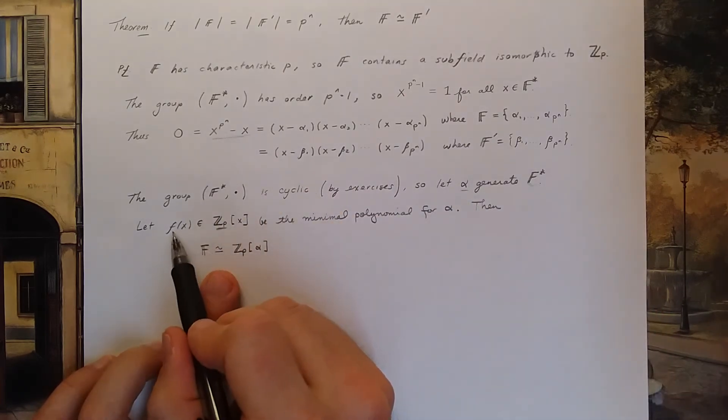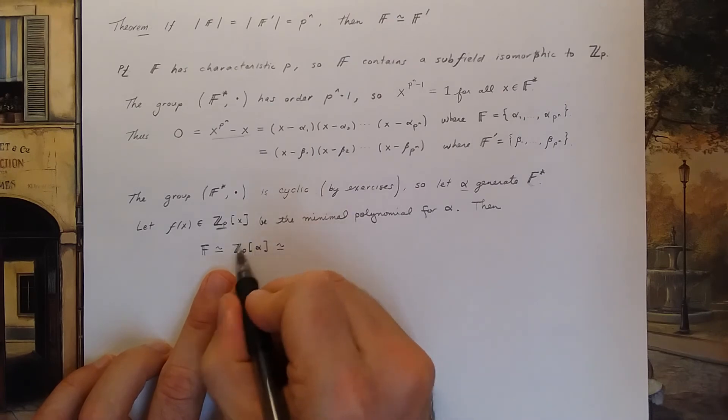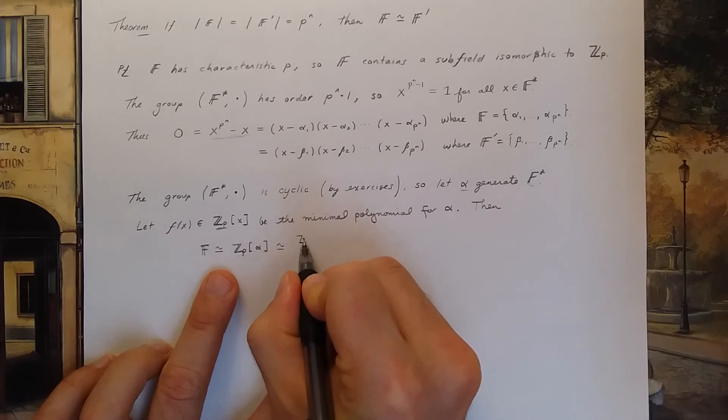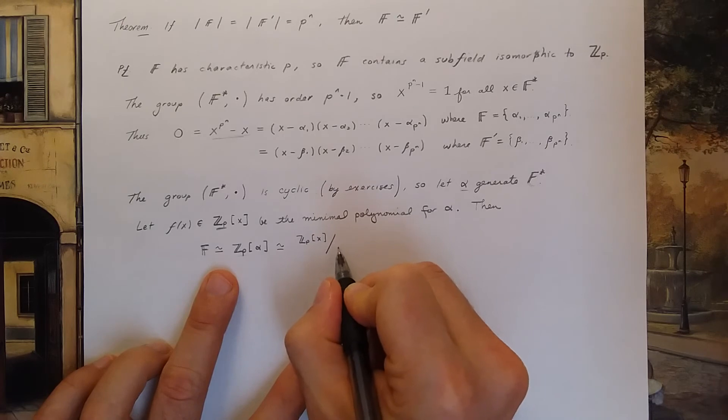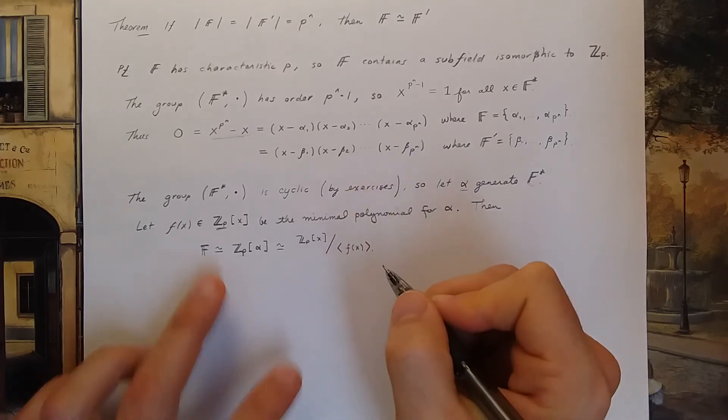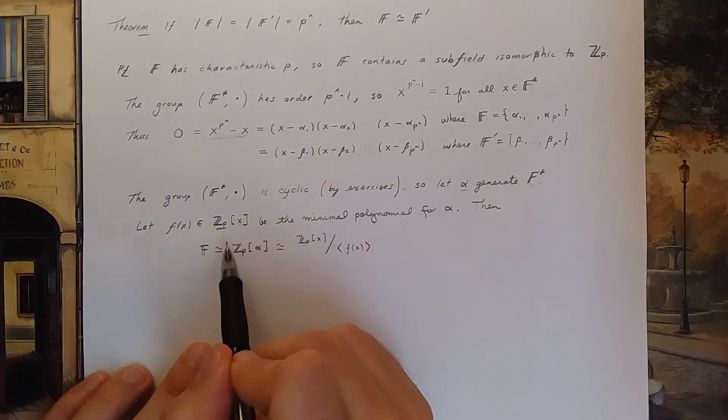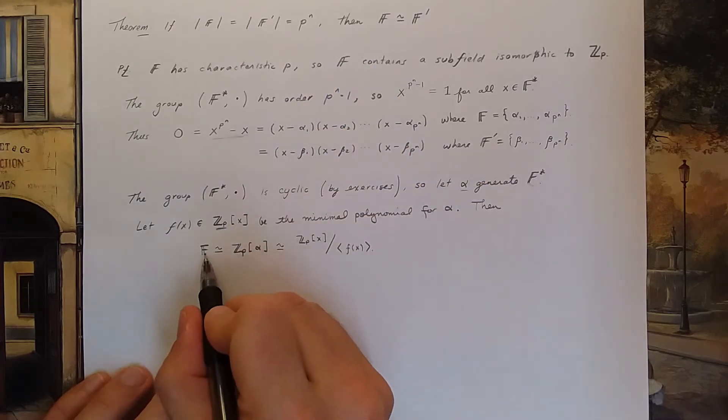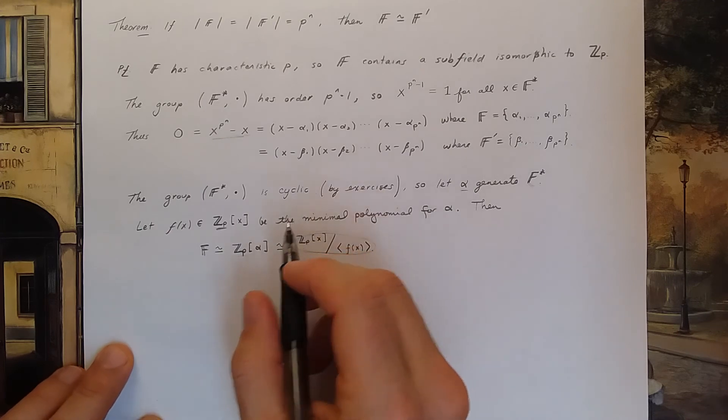Now if f is the minimal polynomial for alpha, then we've seen that this field is also isomorphic to the field of polynomials Zp x where I factor out by the ideal generated by my minimal polynomial. Okay, that's where we are so far. And to prove the theorem, what I'm going to do is I'm going to prove that F prime, the second field, is also isomorphic to this same factor ring, the same quotient ring. Here's how I'm going to do it.